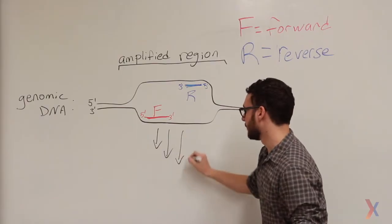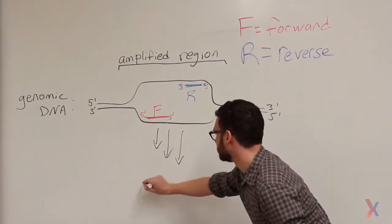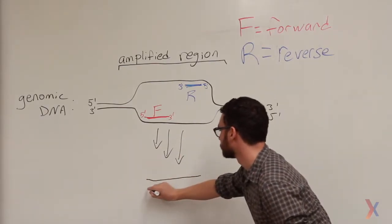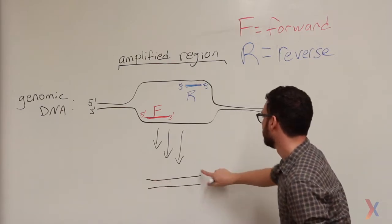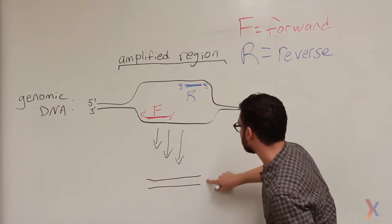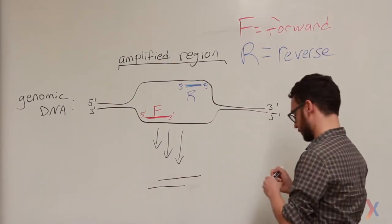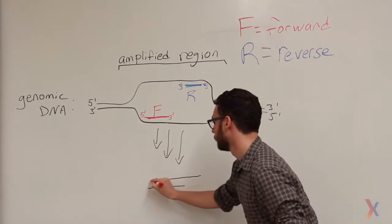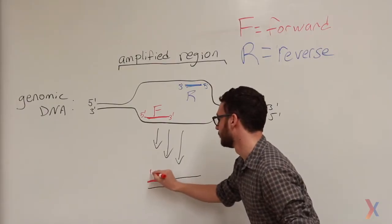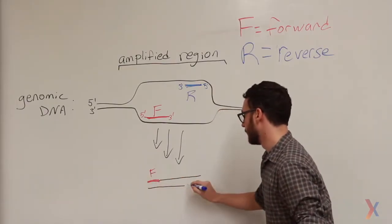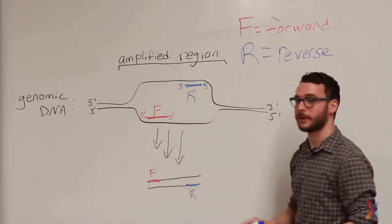After many cycles of PCR, the most predominant DNA product that will be present in the solution will look something like this. The sequence will exactly match my amplified region, and the sequence here will be identical to my forward primer, and the sequence here will be identical to my reverse primer.